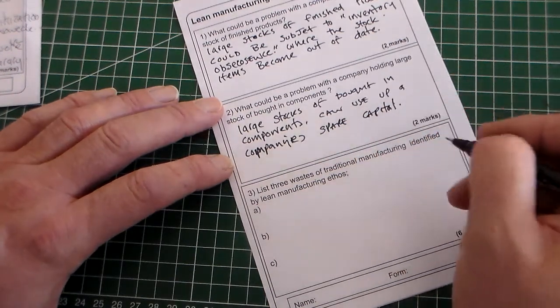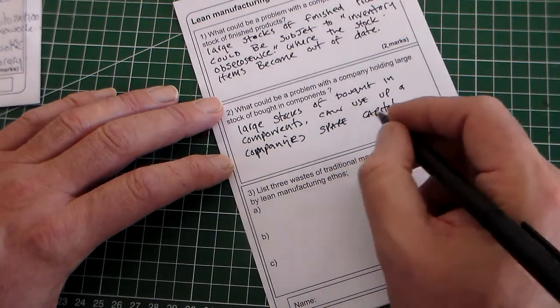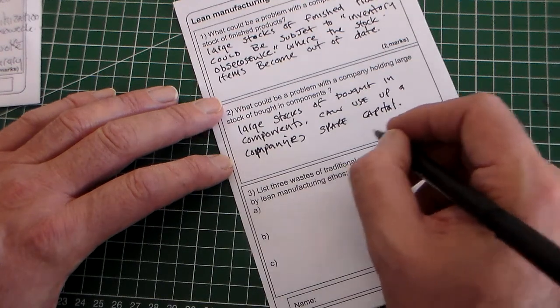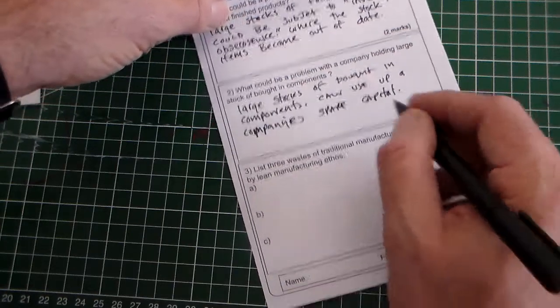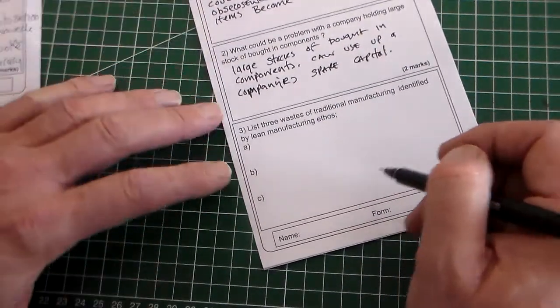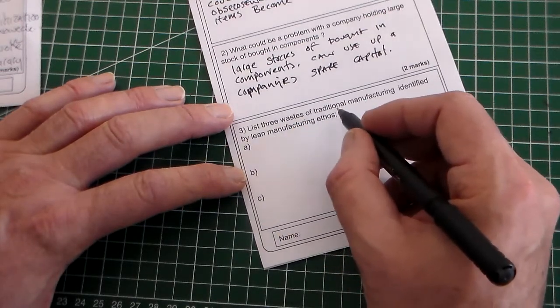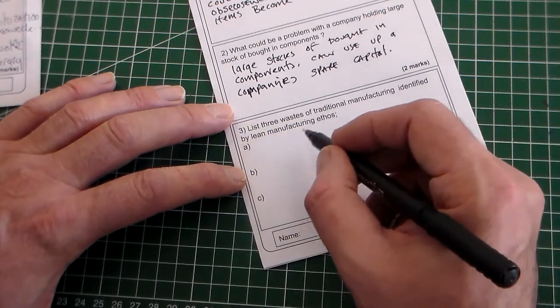So it can use unnecessary amounts of spare capital. Basically, you know, money that they could have in the bank or could be investing, they have it tied up in stock. So that's two marks for that, two marks for this. And we've just got the last one.